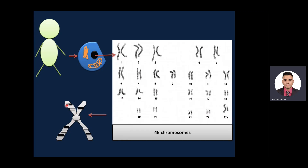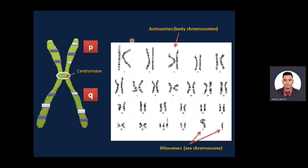The stain becomes more concentrated in areas with more adenine and thymine, which is why you see different staining patterns. This is very important for information about translocations and rearrangements.